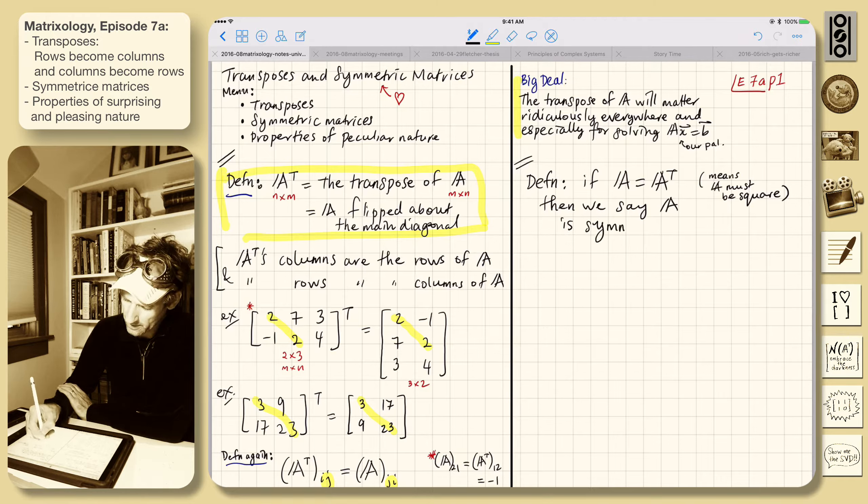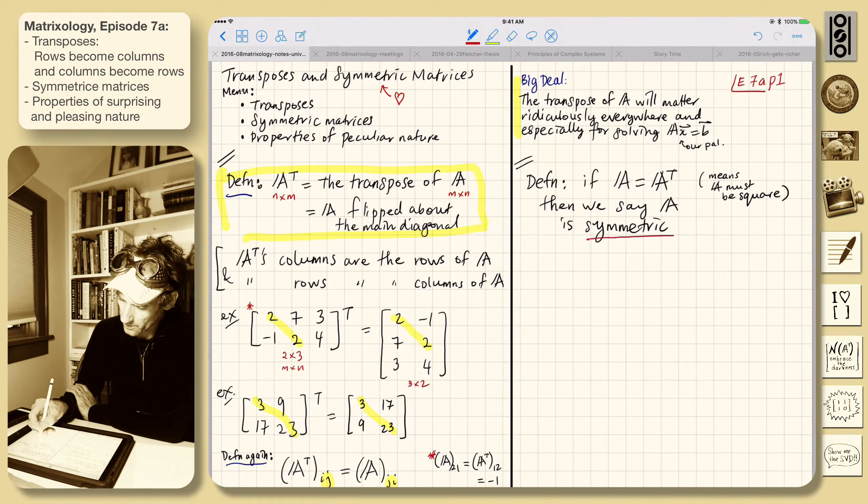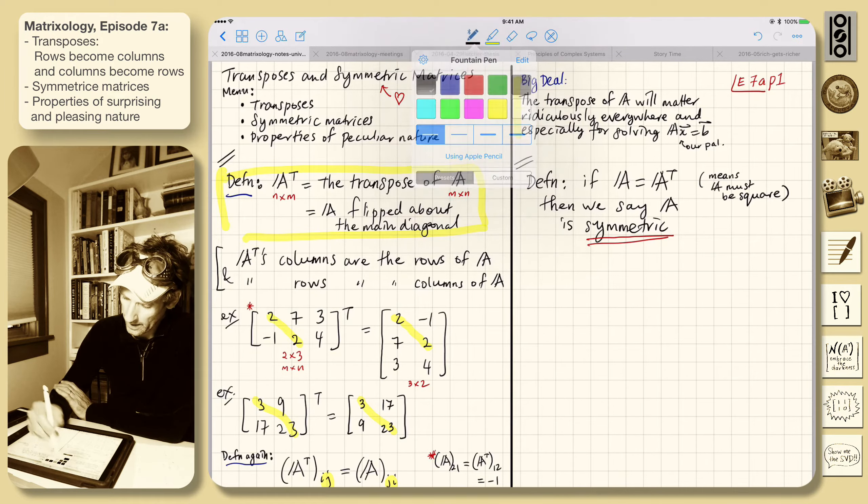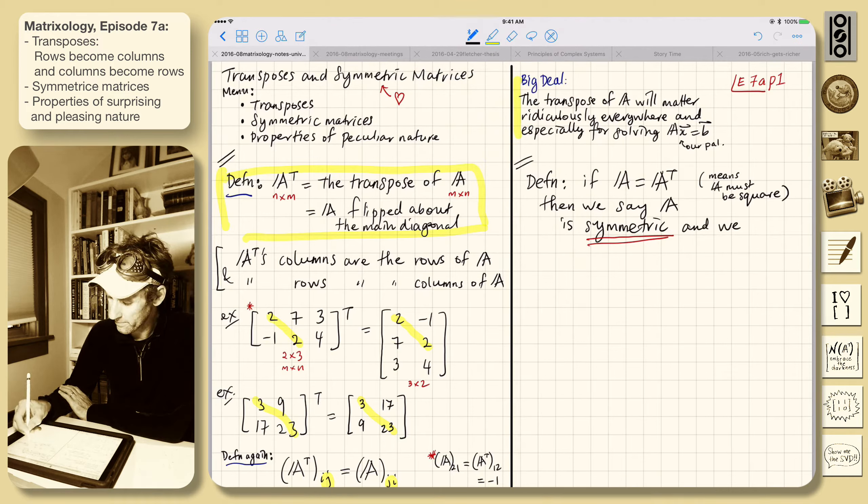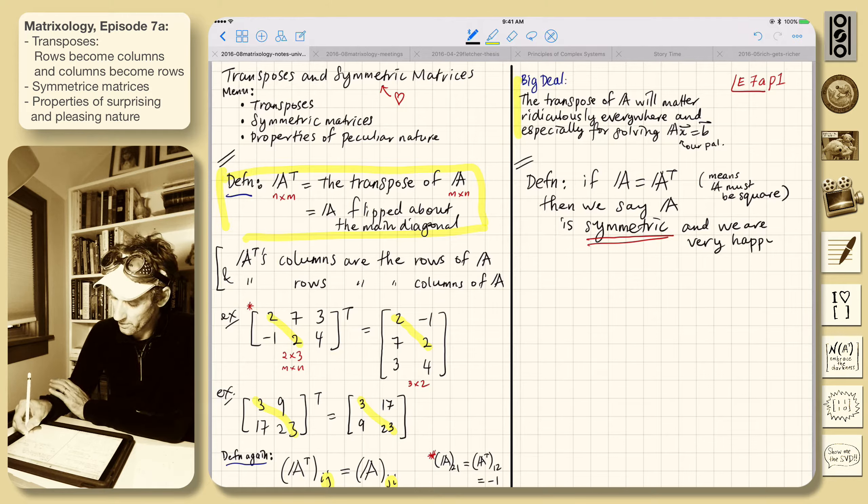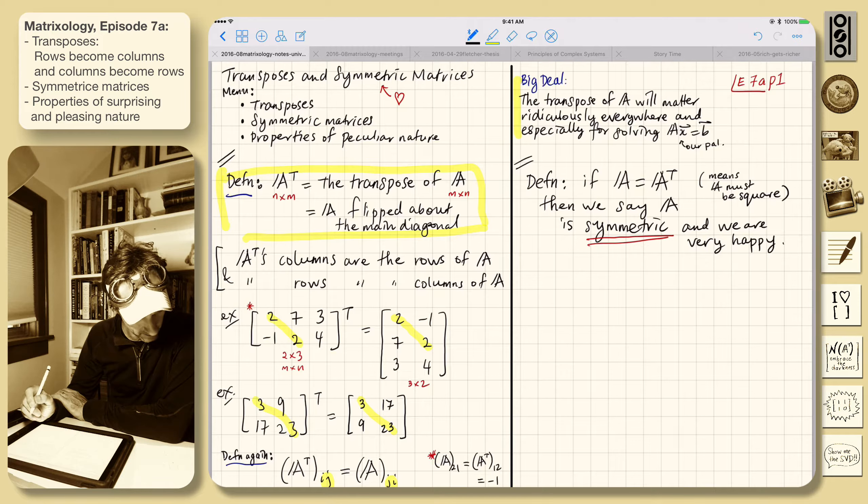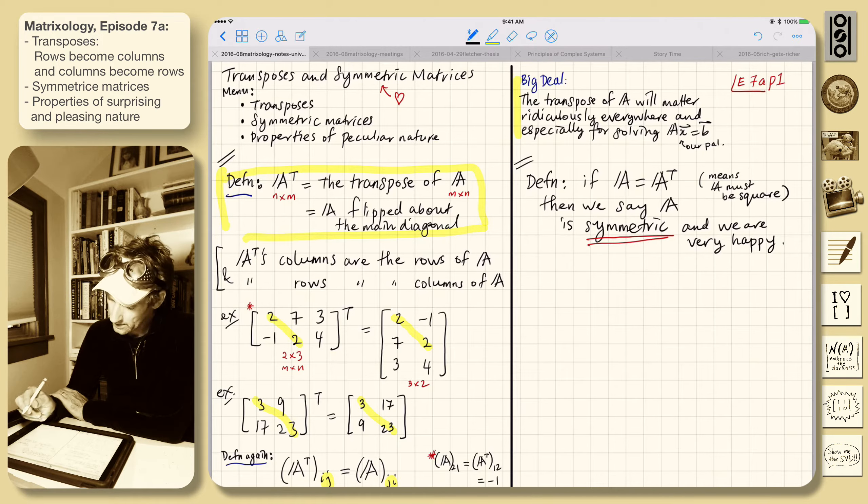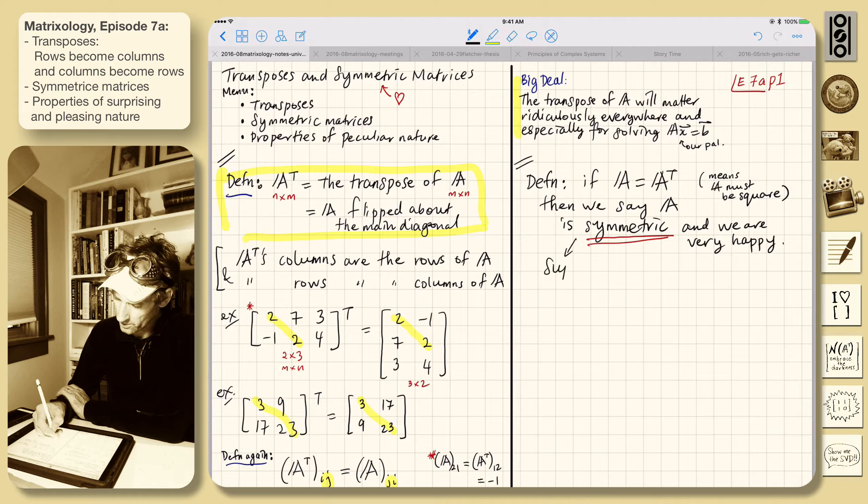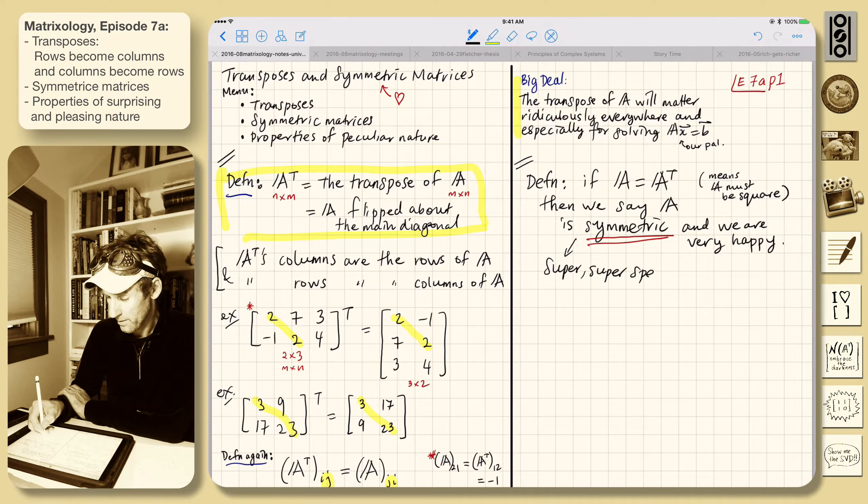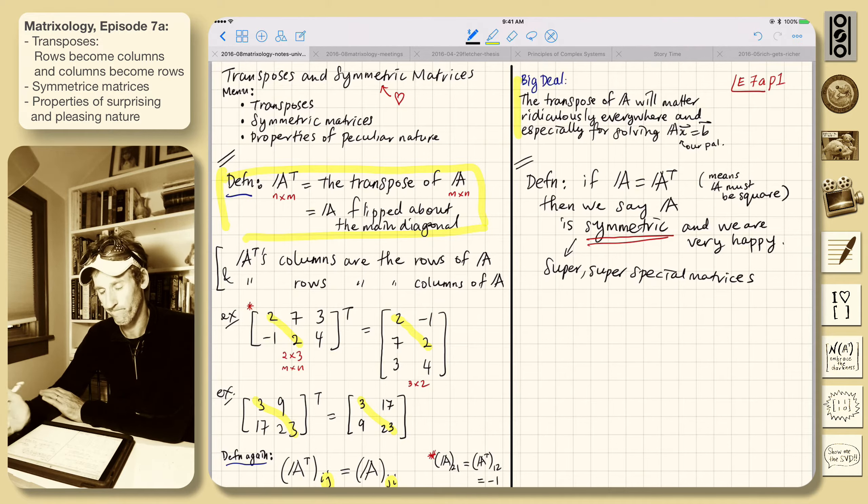Then we say A is symmetric. And we jump up and down. It's symmetric. This is the word, very important word, symmetric. And we are very happy. See the happiness, feel the happiness. Very happy. Very, very important kind of matrix. These are really super special, super super super super special matrices.